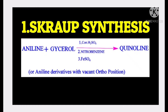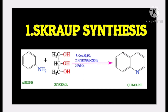In Skraup synthesis, quinoline is prepared by using aniline and glycerol. In this method, concentrated sulfuric acid is used as a dehydrating agent and nitrobenzene is used as an oxidizing agent as well as solvent.